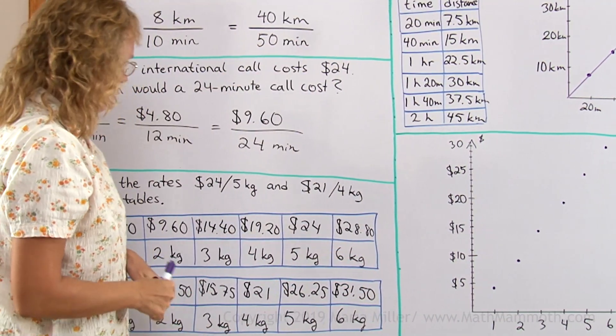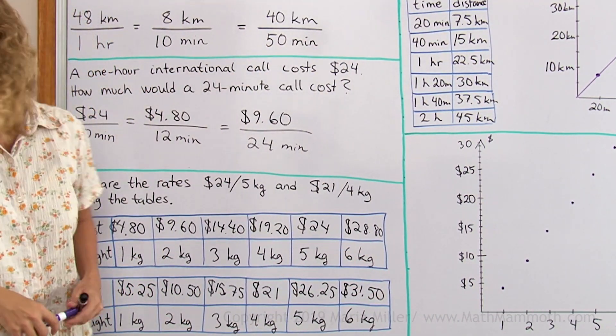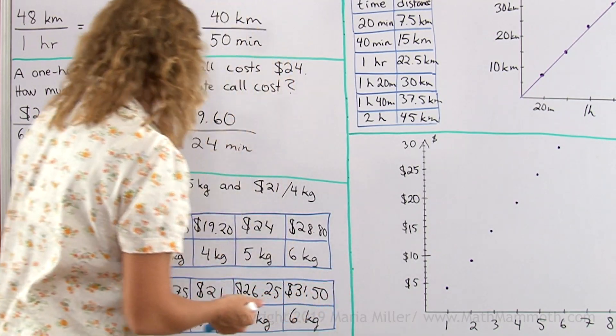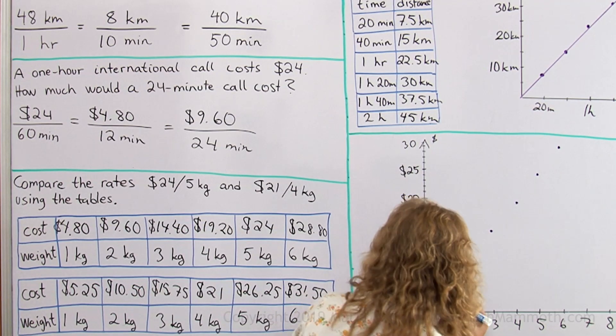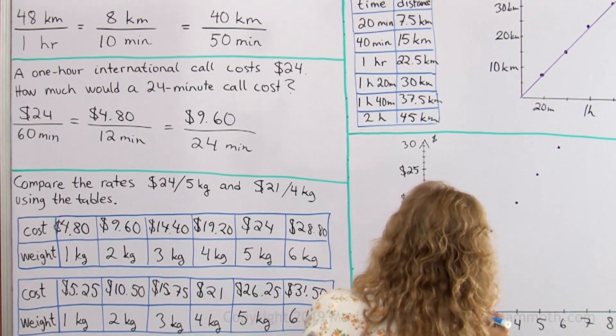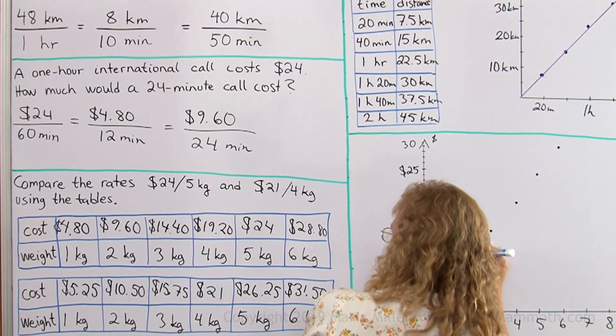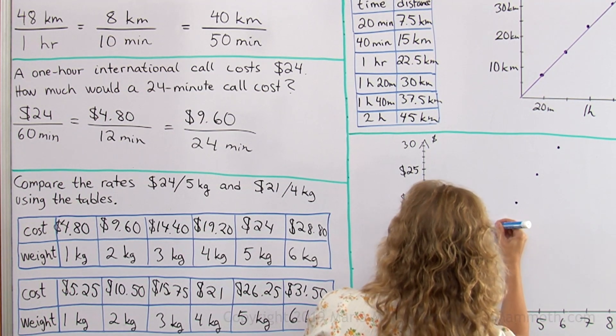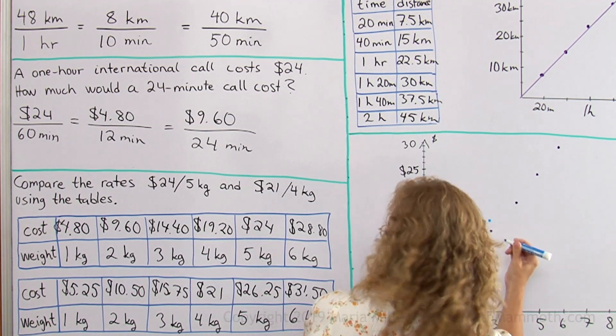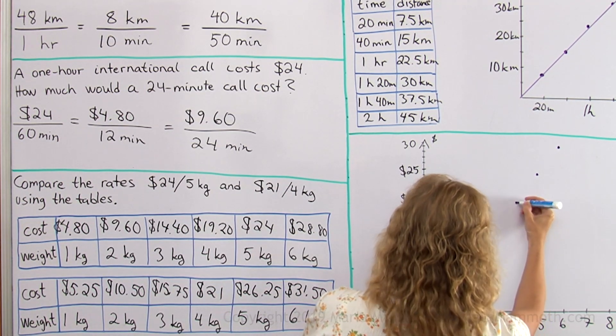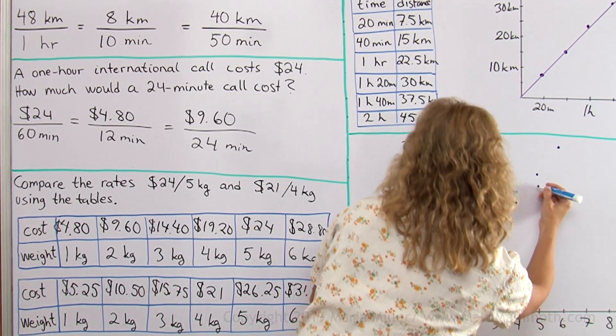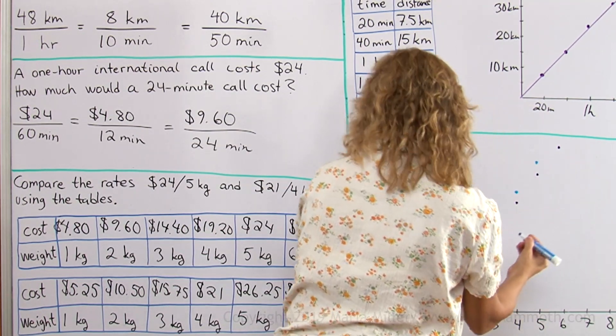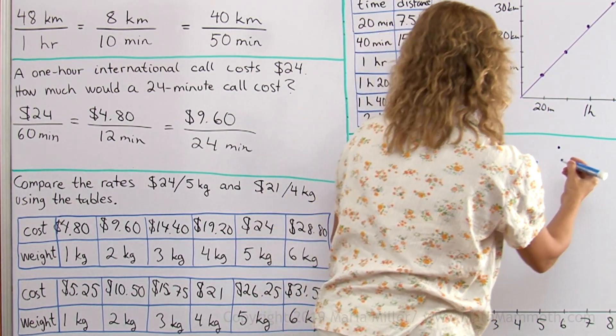And now, I will plot these points. Here, there will be a little bit more. So 1 kilogram is 5.25. 2 kilograms is 10.50. 3 kilograms is 15.75. And then 4 kilograms is 21. 5 kilograms is 26.25. And then 6 kilograms is 31.50.